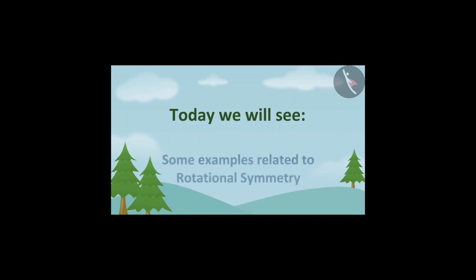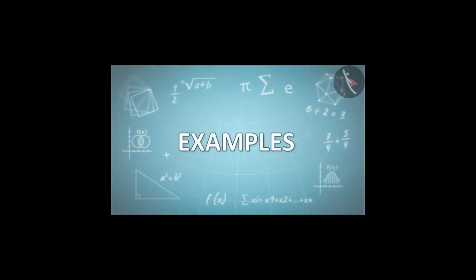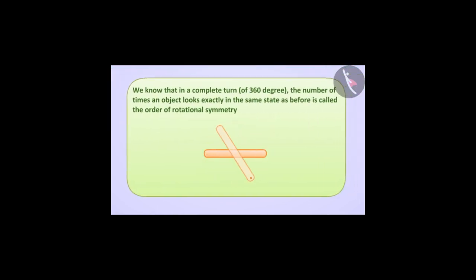Today we will see some examples related to rotational symmetry. We know that in a complete turn of 360 degrees, the number of times an object looks exactly in the same state as before is called the order of rotational symmetry.